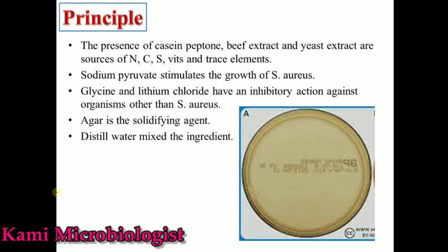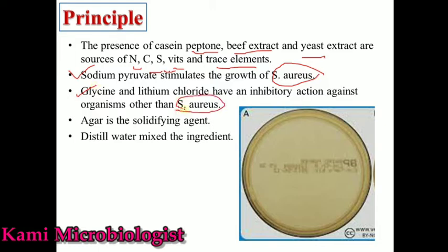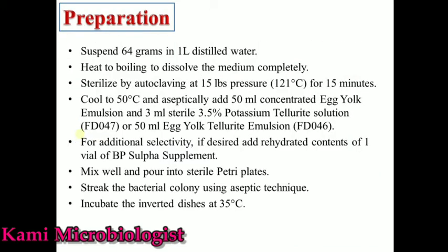The principle of this media: peptone, beef extract, and yeast — these three types of ingredients mostly provide nitrogen, carbon, sulfur, vitamins, and other trace elements which are specially important for bacterial growth. Sodium pyruvate is specially important for Staphylococcus aureus growth. Glycine and lithium chloride are mostly important to stop the growth of other bacteria other than Staphylococcus aureus. Agar is specially important to provide a stable environment as a solidifying agent through which bacteria can grow in the form of colonies. Distilled water is used to mix all the ingredients.